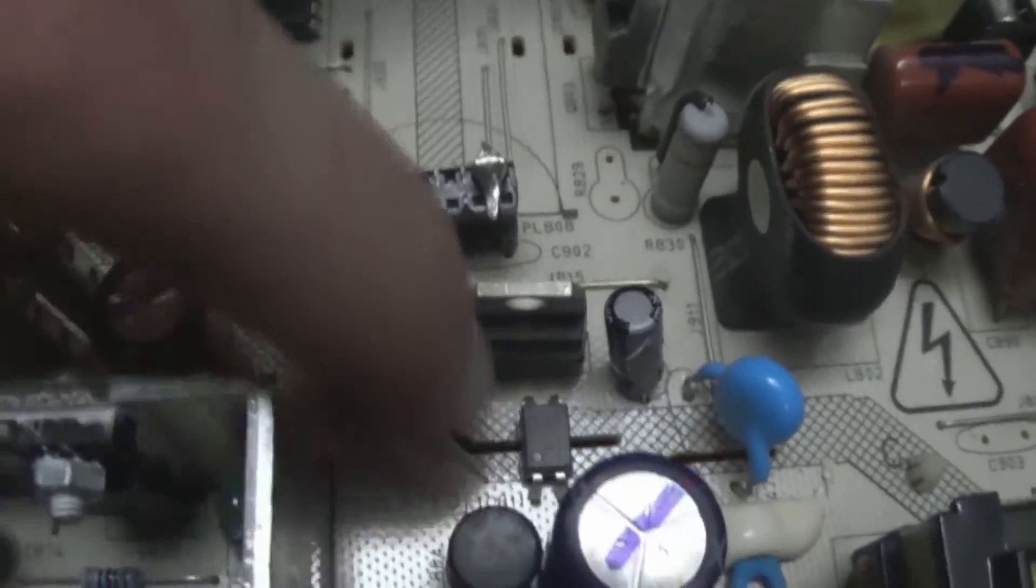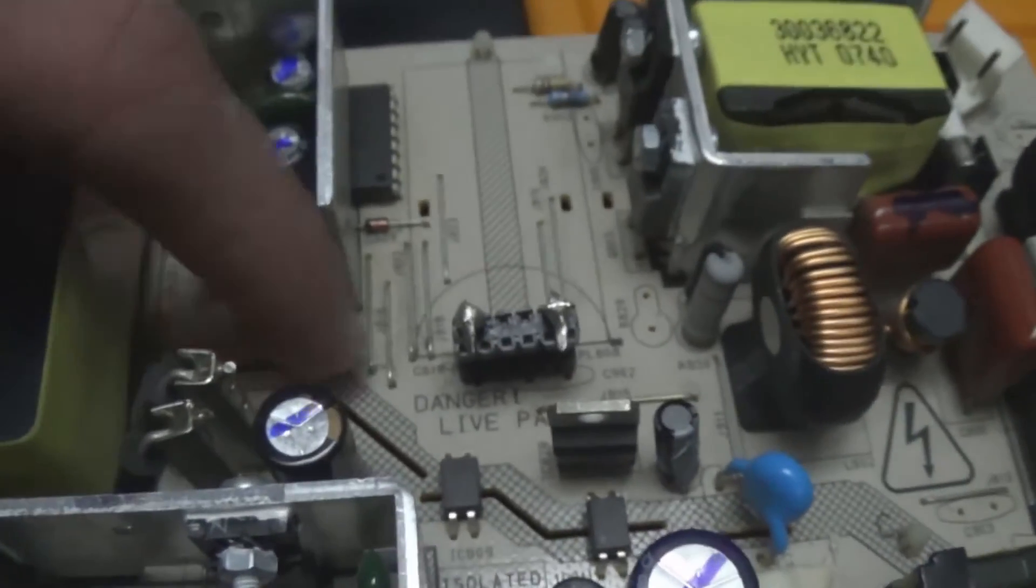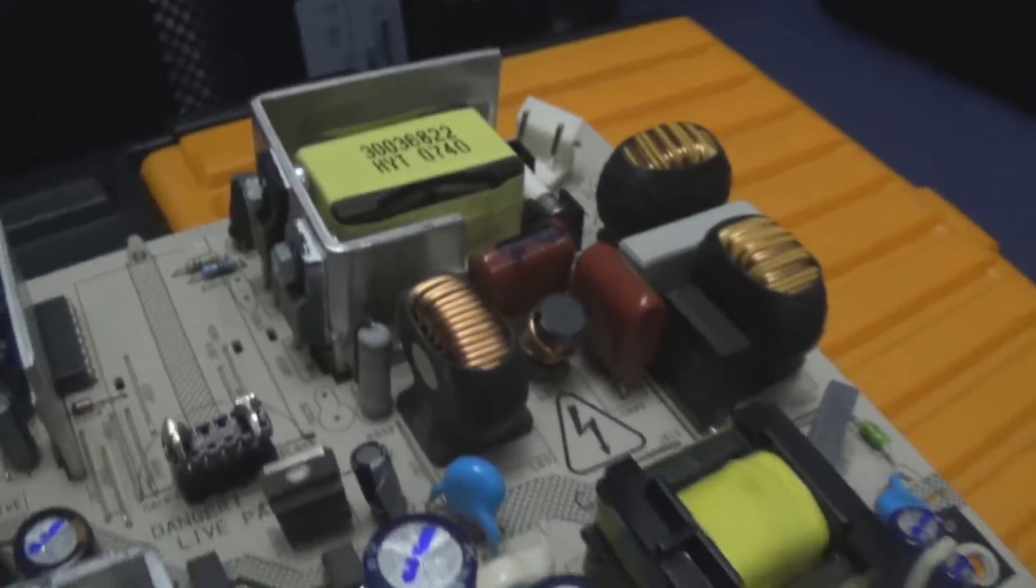So something on the primary side of the power supply, which the primary and secondary is divided by these opto ICs in this line here. So anything above this line is the primary side.